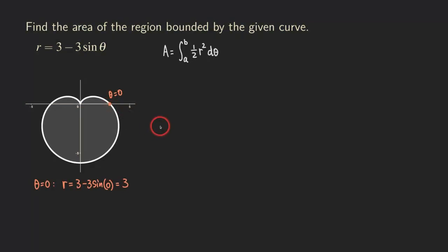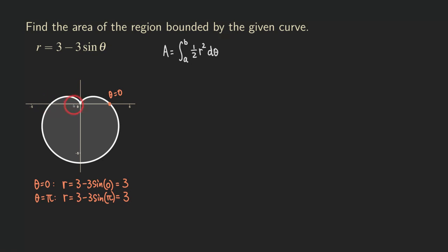Now let's plug in theta equals pi. We get r equals 3 minus 3 sine of pi. Sine of pi is also zero, so r is 3 again. Since the angle is pi, we go three units in that direction from the origin. This is how we trace out the curve — in the counterclockwise direction — going from zero to pi.